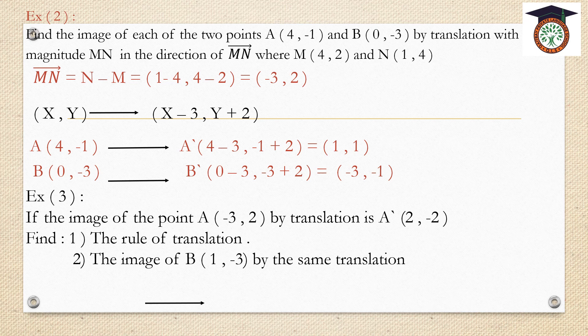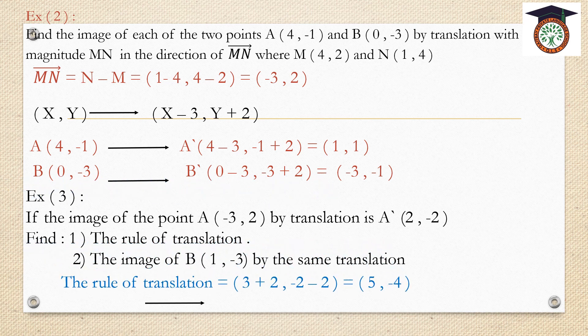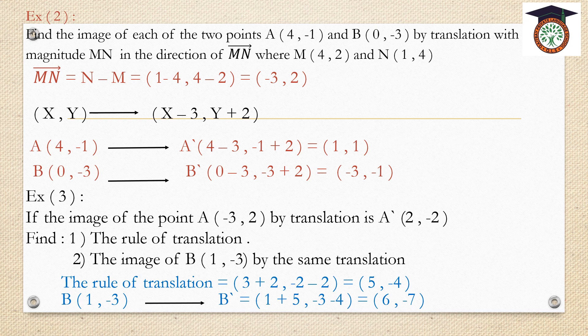Exercise 3: The image of point A(-3, 2) by translation is A dash (2, -2). Find the rule of translation and find the image of B(1, -3) by the same translation. The rule of translation is: x plus 5 and y minus 4, since -3 plus 5 equals 2 and 2 minus 4 equals -2. For B(1, -3): B dash is 1 plus 5 and -3 minus 4, which is (6, -7).